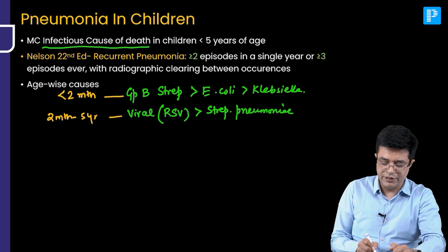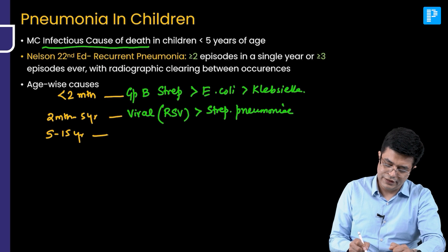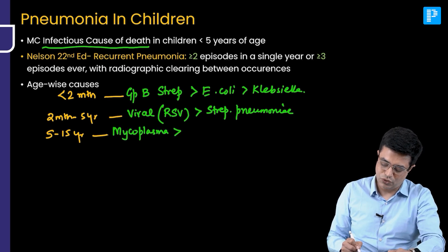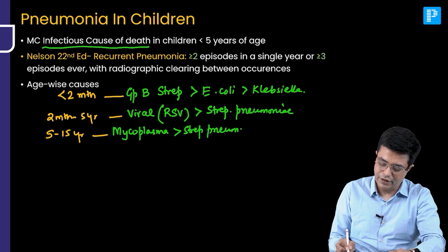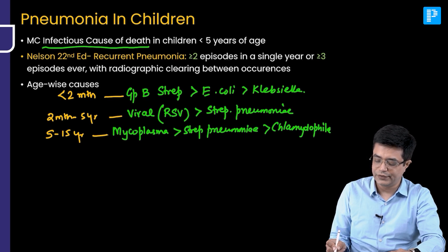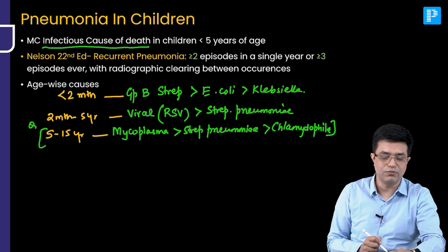For the age group between 5 to 15 years, which includes the school-going population, the common pathogen is Mycoplasma pneumoniae, followed by Streptococcus pneumoniae (pneumococcus), followed by a member of the Chlamydia family known as Chlamydophila. This list is given in Nelson as well, and this is a previous year MCQ point to remember.